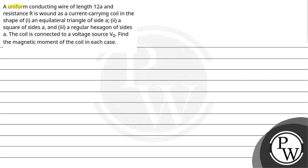Let's read the question. A uniform conducting wire of length 12a and resistance R is wound as a current carrying coil in the shape of firstly an equilateral triangle of side A, second a square of side A, and third a regular hexagon of side A. The coil is connected to a voltage source V0. Find the magnetic moment of the coil in each case.